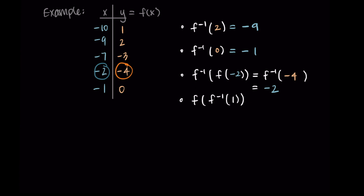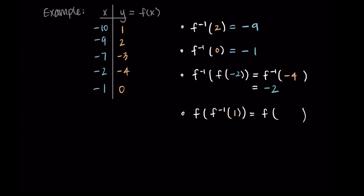When doing the inverse composed with the original function — f inverse of f — we should just get back where we started. We started with negative 2 and got negative 2. So for f of f inverse of 1, we should just get 1. Let's verify: f inverse of 1 means we look for y = 1 and find the corresponding input, which is negative 10. Then f(−10): negative 10 as an input corresponds to 1 as an output, so f(−10) = 1, and we got back where we started.